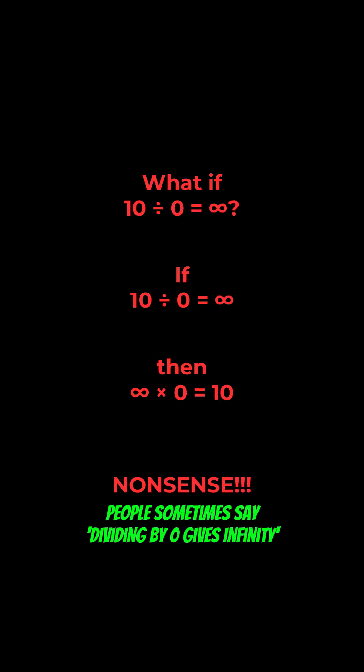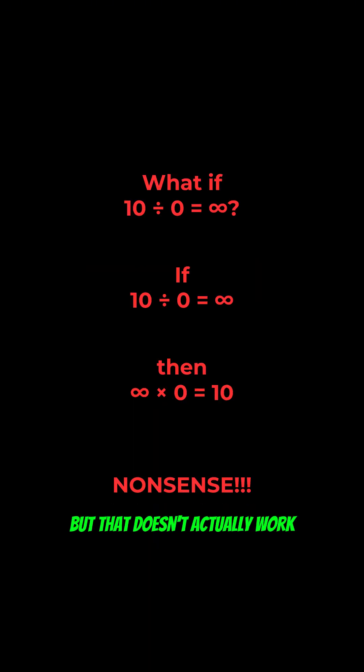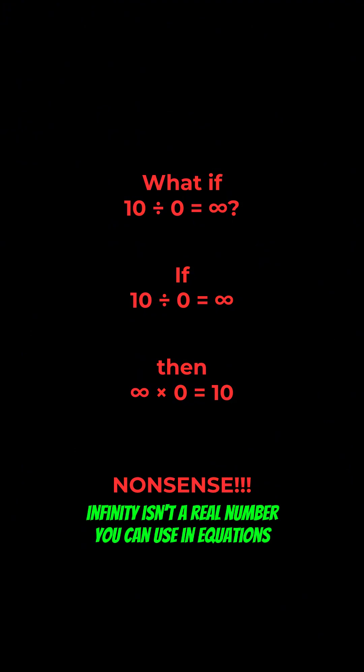People sometimes say dividing by zero gives infinity. But that doesn't actually work. Infinity isn't a real number you can use in equations. If 10 divided by zero really were infinity, then infinity times zero would have to equal 10. And that makes no sense.